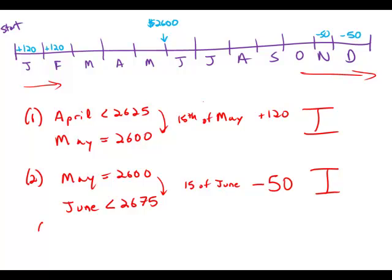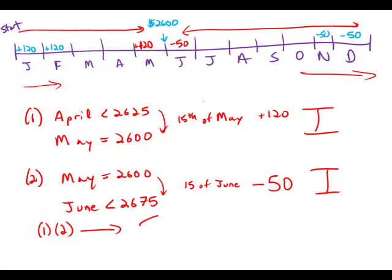Both statements are insufficient alone. So now we're going to put the information together. In May, we know that we're still adding 120. In June, we know that we're subtracting 50. So it means the first five months of the year, we're adding 120. The last seven months of the year, we're subtracting 50. And that does allow us to figure out the closing balance at the end of each month last year. So statement one and statement two together are sufficient. And the answer is C.